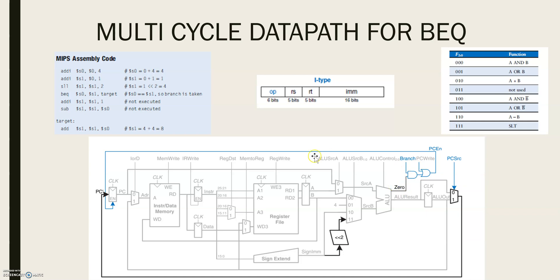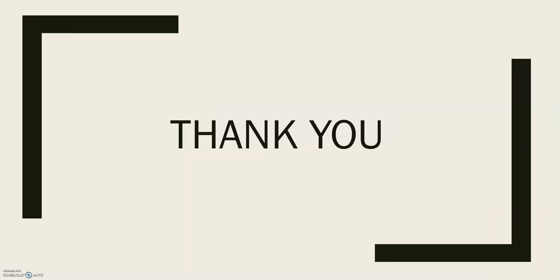Hence, the datapath computes the new PCWrite enable, also known as PCEN, which is true either when PCWrite is asserted or when both branch and zero are asserted. So this completes the design of a multi-cycle MIPS processor datapath. Thank you.